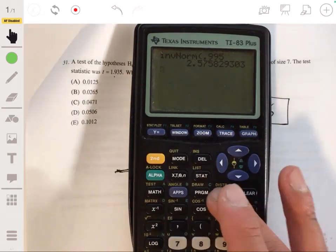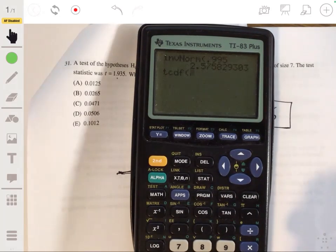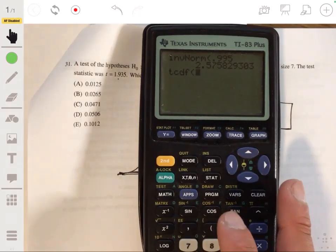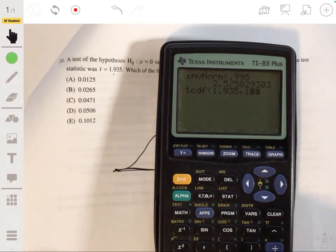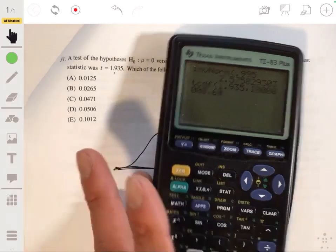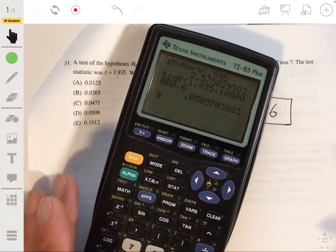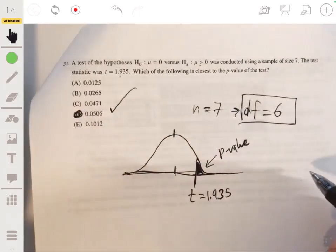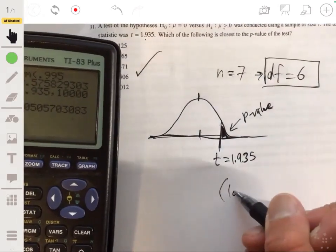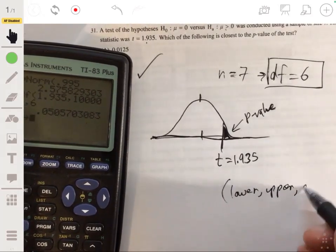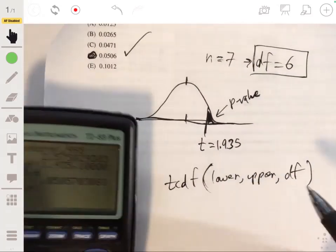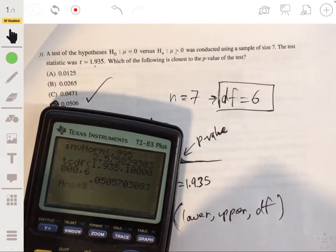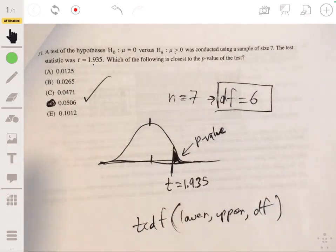So you can also do this in your calculator, which I recommend, go with distribution, go to TCDF, enter the T, enter the critical or enter the test statistic T 1.935 first. Then you go to the upper bound, like area to the right or values to the right, it's very big comma, then the degrees of freedom. So that'll give you about 0.05, which will be D. So again, the syntax here is the lower, upper bound and then degrees of freedom. But if you have a newer calculator, it'll be very straightforward. It'll literally have rows for you to enter these specific values. So you won't have to memorize anything.